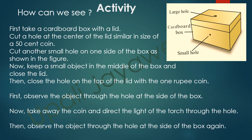First, observe the object through the hole at the side of the box. Now take away the coin and direct the light of the torch through the hole. Then observe the object through the hole at the side of the box again. At the first instance, you will not see the object inside the box. In the second instance, you can see the object through the small hole.